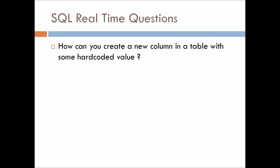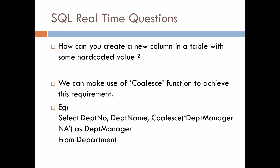This is the last question for this video. How can you create a new column in a table with some hard-coded value? We can make use of the COLLAGE function: SELECT department_number, department_name, COLLAGE(department_manager, 'NA') AS department_manager FROM department. The output will have three columns — department number, department name, and department manager — with the hard-coded value 'NA' in all rows of the department manager column. In this way you can create a hard-coded new column in your existing query.